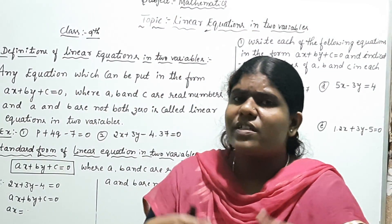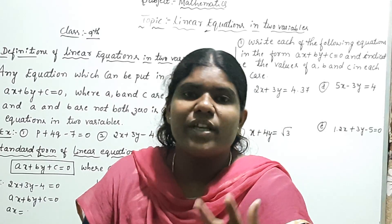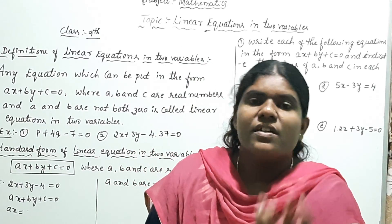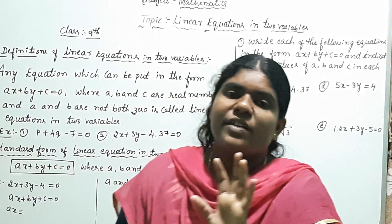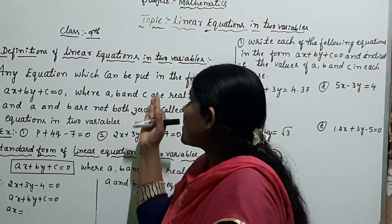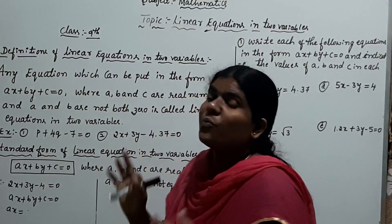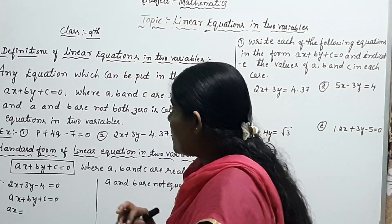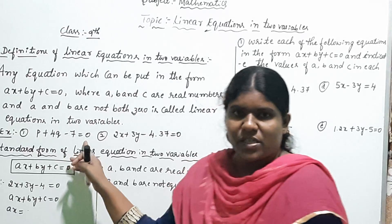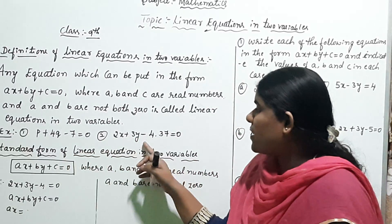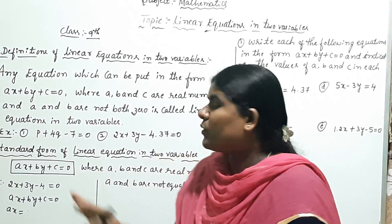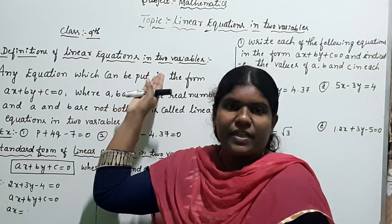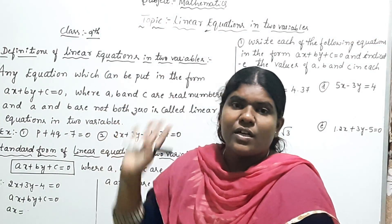Any algebraic expression containing two variables that is directly equal to zero — this type of equation is called a linear equation in two variables. For examples: P plus 7 is equal to zero; and AX plus 3Y minus 4.37 is equal to zero. These are two examples of linear equations in two variables.